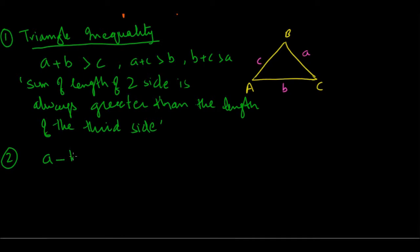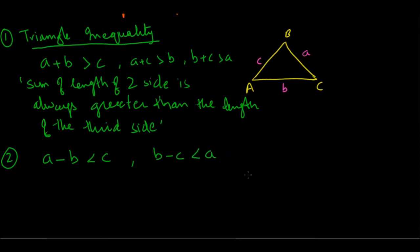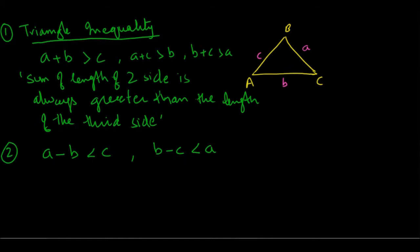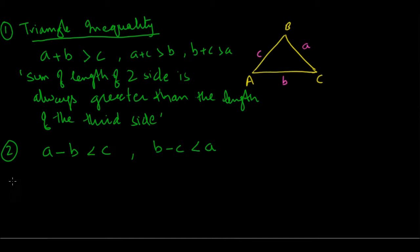The second property is a derivative of the first: the difference in the length of any two sides must be less than the third side. This is rarely used on the GRE but still good to know. For example, the positive difference between sides b and c has to be less than the third side.